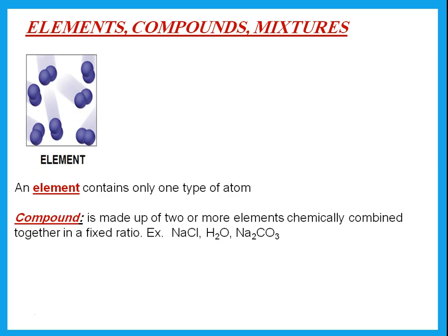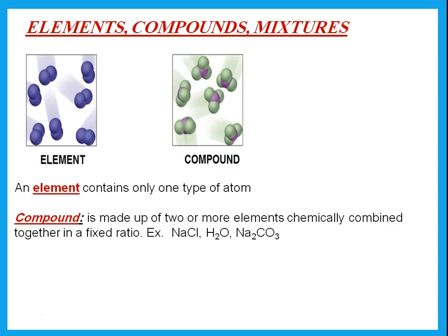What about a compound? A compound is made up of two or more elements, chemically combined together in a fixed ratio. Each molecule is made up of different elements. Don't use the word 'combined' in any of the other definitions — only for a compound. For example, sodium chloride has one atom of sodium and one atom of chlorine. Water, H₂O, has two atoms of hydrogen attached to one atom of oxygen. Sodium carbonate is made up of two atoms of sodium, one atom of carbon, and three atoms of oxygen.